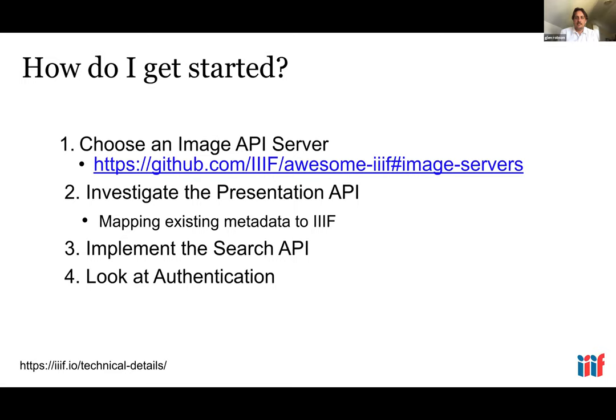After that, you might want to look at the IIIF search API, particularly if you have OCR transcriptions or annotations from crowdsourcing. There are a number of tools available to implement the search API on the Awesome IIIF list. Finally, there is authentication — not a huge number of institutions have implemented it, but Stanford, the British Library, and the Wellcome Trust are good examples. Most people concentrate on their open access images, although you can make more closed access images available through IIIF.